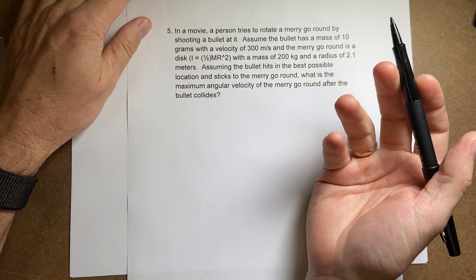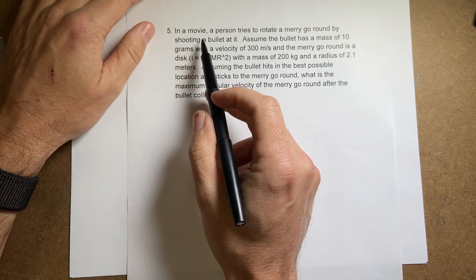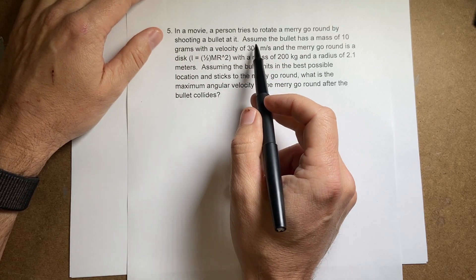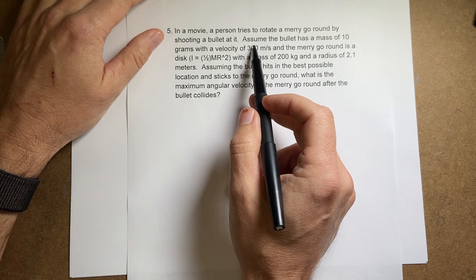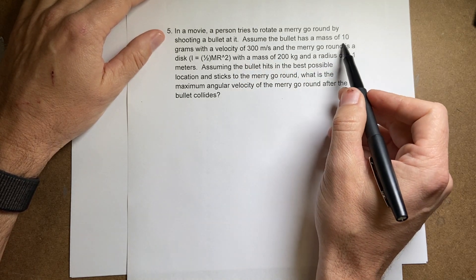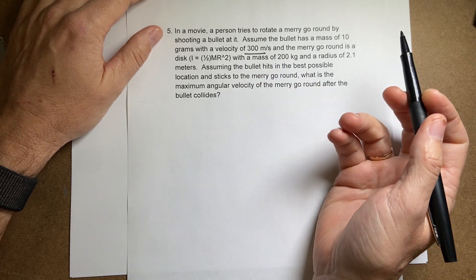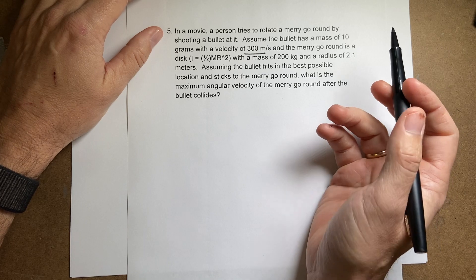In a movie, and I printed it out, a person tries to rotate a merry-go-round by shooting a bullet at it. I don't even know what movie that was, but I remember seeing it. Assume the bullet has a mass of 10 grams, which is probably too high, and a velocity of 300 meters per second, which is probably okay since bullets can go slow and fast.